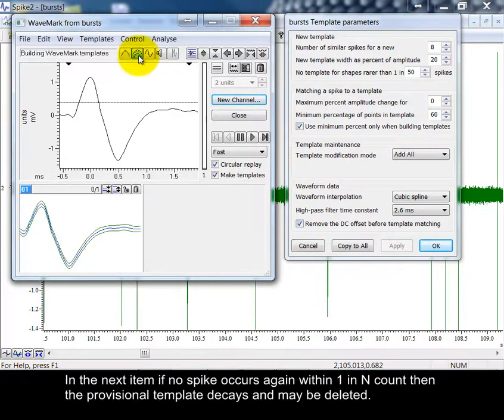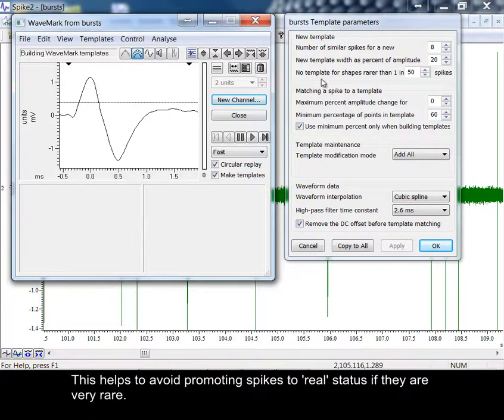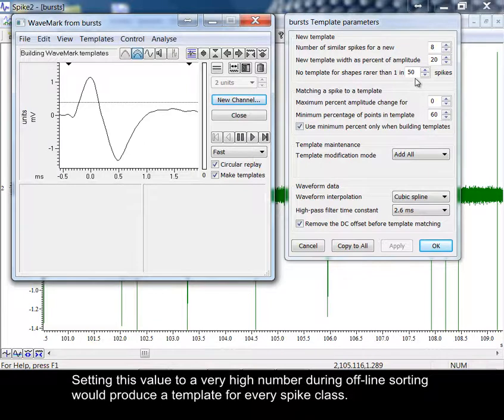In the next item, if no spike occurs again within one in n count, then the provisional template decays and may be deleted. This helps to avoid promoting spikes to real status if they are very rare. Setting this value to a very high number during offline sorting would produce a template for every spike class.